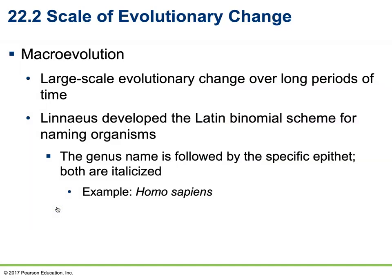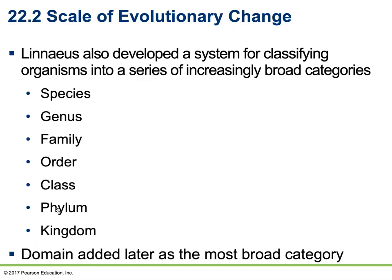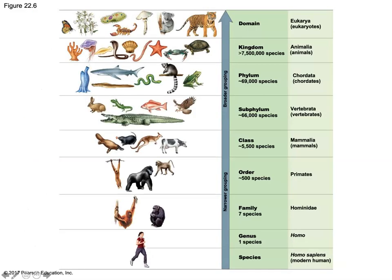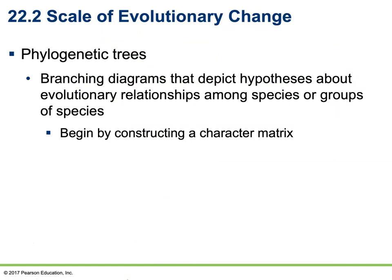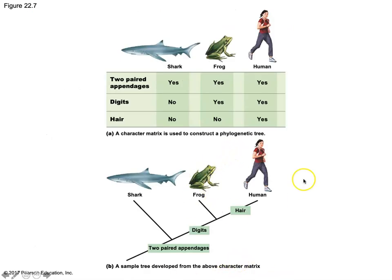Macroevolution is the large-scale evolutionary change over long periods of time. Carl Linnaeus developed a Latin binomial scheme for naming organisms, where the genus name is followed by the specific epithet, both italicized — for example, human beings are Homo sapiens. Linnaeus also developed a classification system with increasingly broad categories: species, genus, family, order, class, phylum, kingdom, with domain added later as the broadest category. Phylogenetic trees are branching diagrams that depict hypotheses about evolutionary relationships among species, constructed using a character matrix based on shared characteristics to show when organisms last shared a common ancestor.